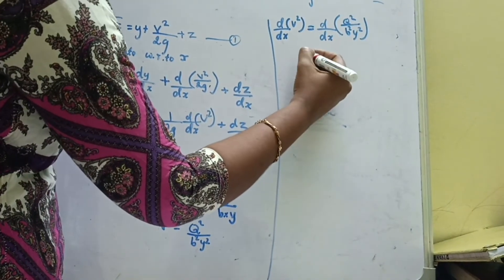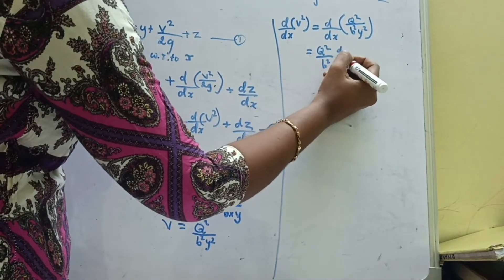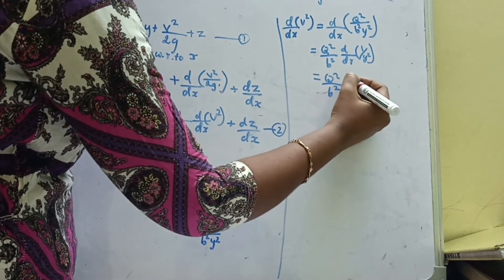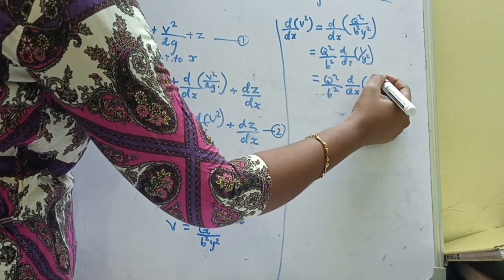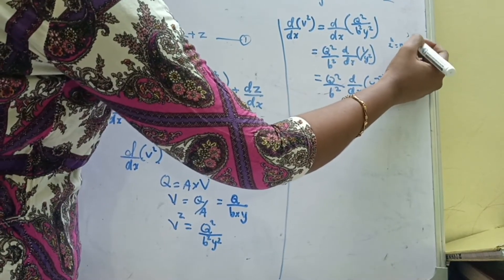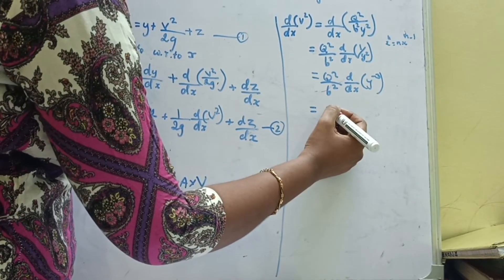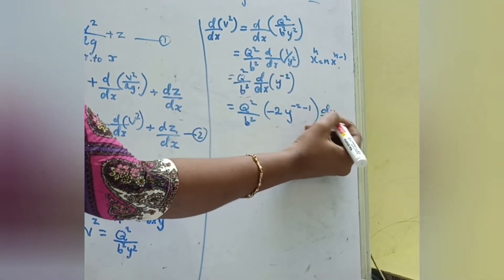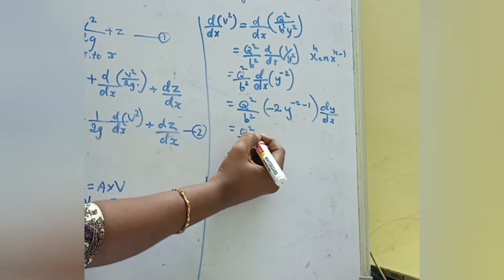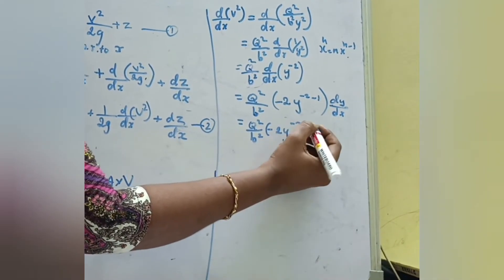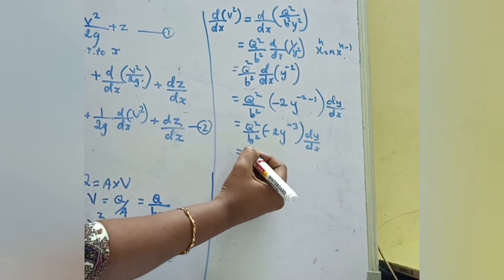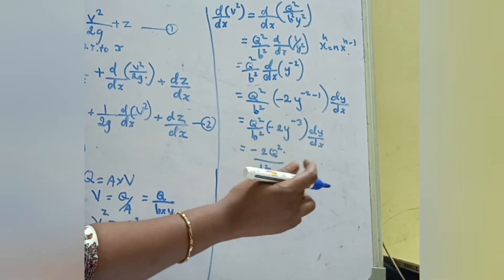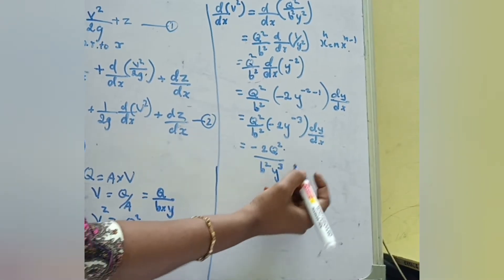Here Q-squared divided by B-squared is a constant, so it comes outside: Q-squared/B-squared into d/dx of (1/y-squared). Writing 1/y-squared as y to the power minus 2, we apply the power rule — d/dx of x^n equals n times x^(n−1). So d/dx of y^(−2) gives minus 2 times y^(−3), and differentiating y with respect to x gives dy/dx. The result is minus 2 times Q-squared divided by B-squared times y-cubed, into dy/dx.